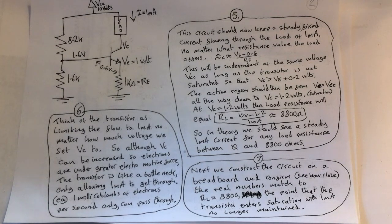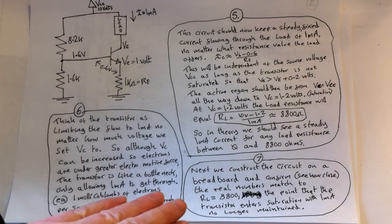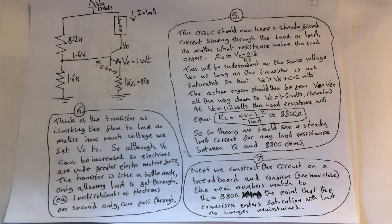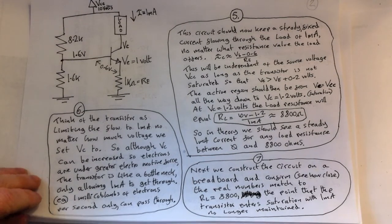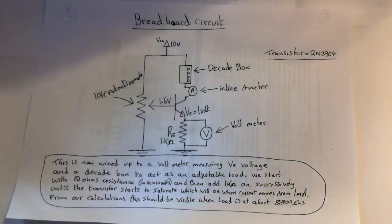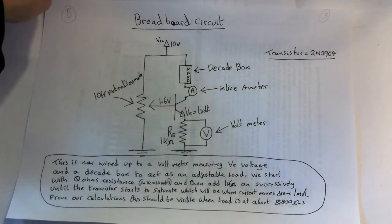We expect to see a 1 milliamp current there across that whole load from 0 ohms up to 8.8k. So we're going to construct the circuit on a breadboard and just confirm that the real numbers match these calculated 8.8k, which is the point that the transistor enters saturation with 1 milliamp then no longer maintained. So that's what we should see.